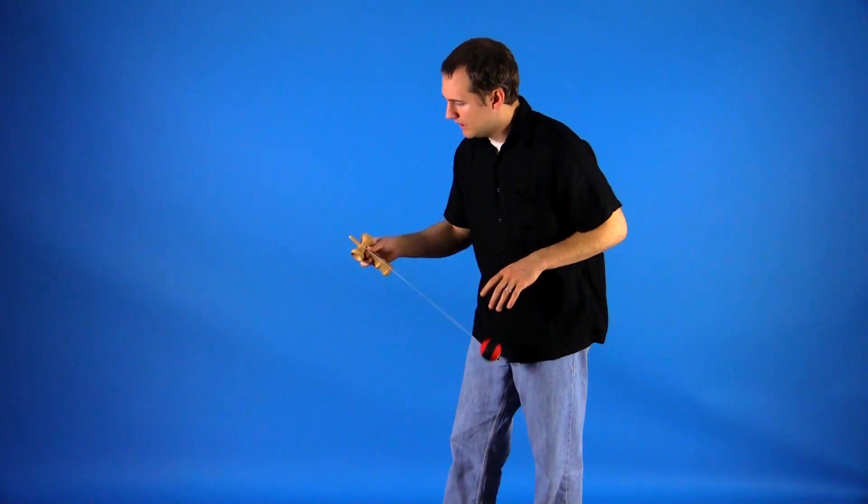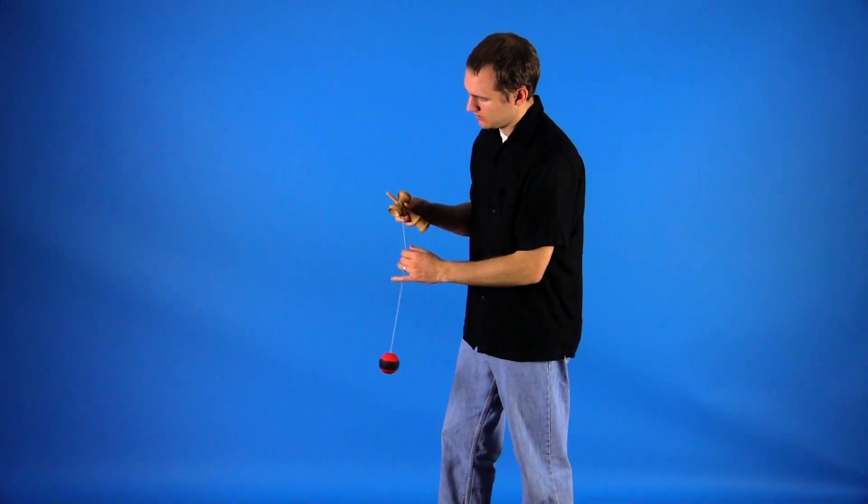You're just going to let go and let it swing forward. You'll notice that the string will hook around the small cup.